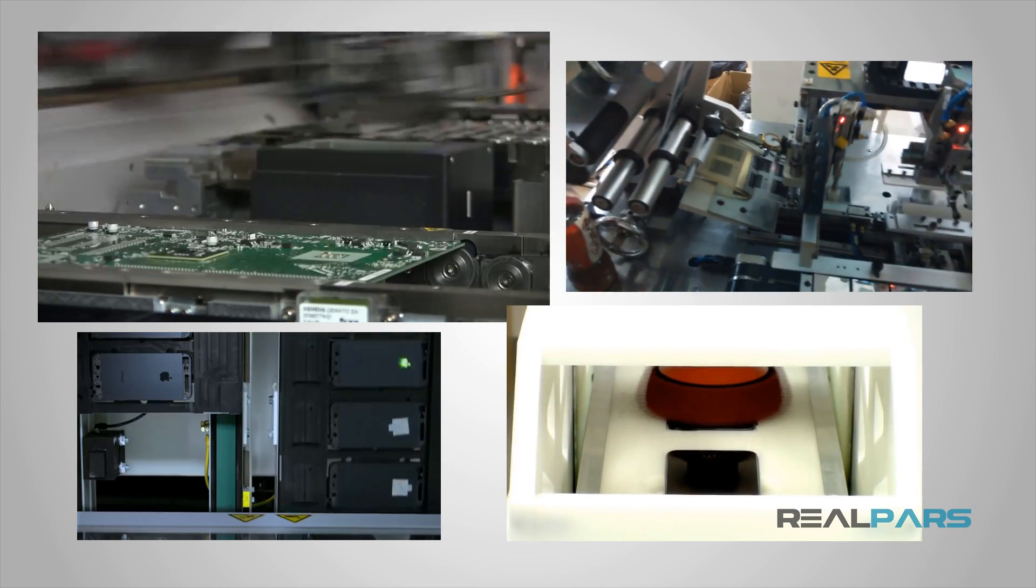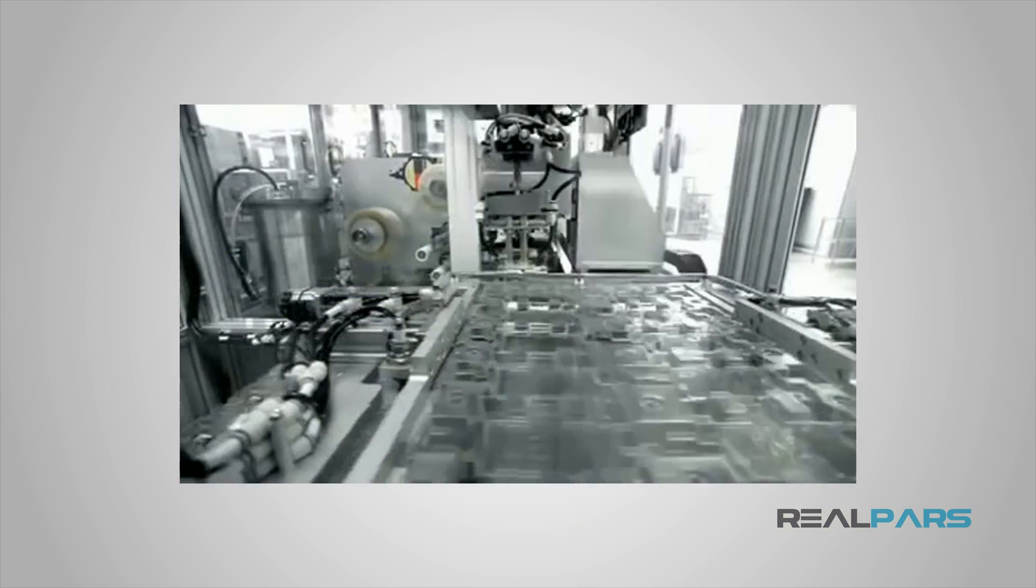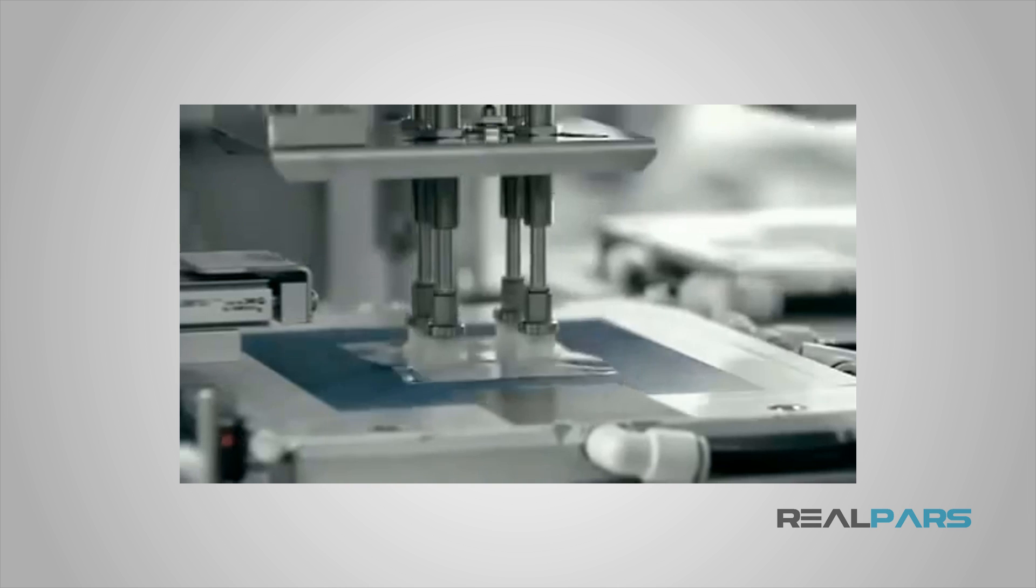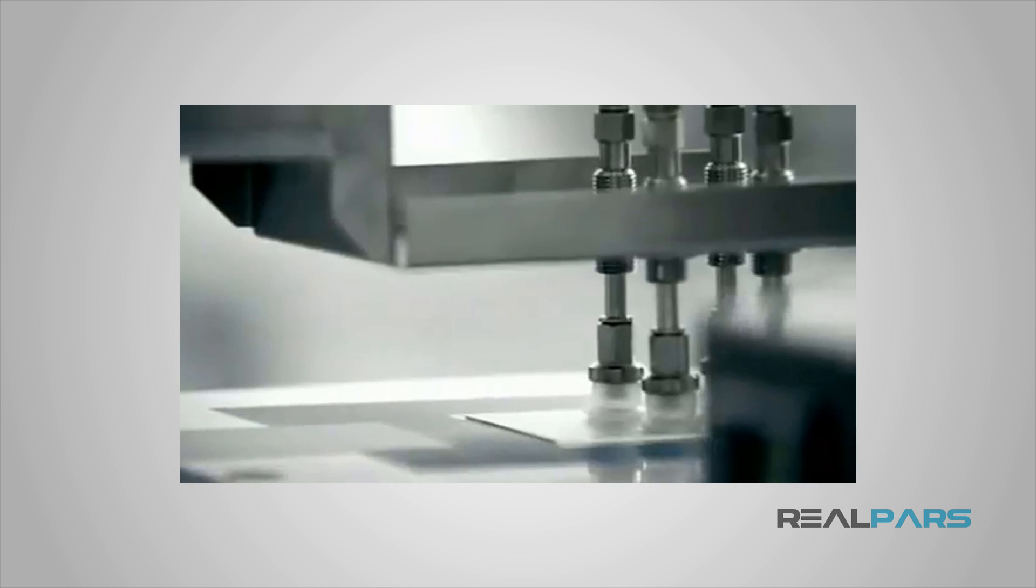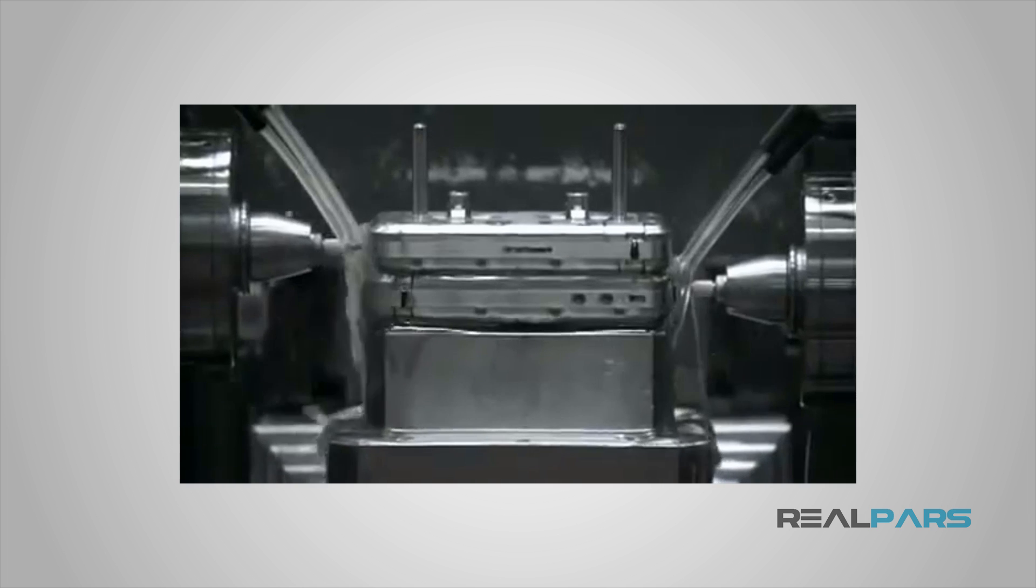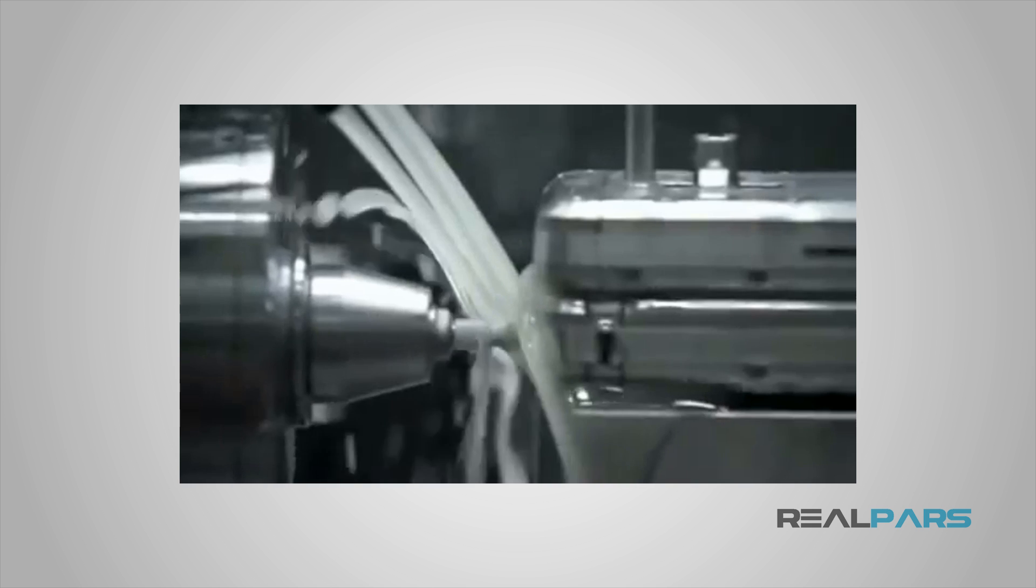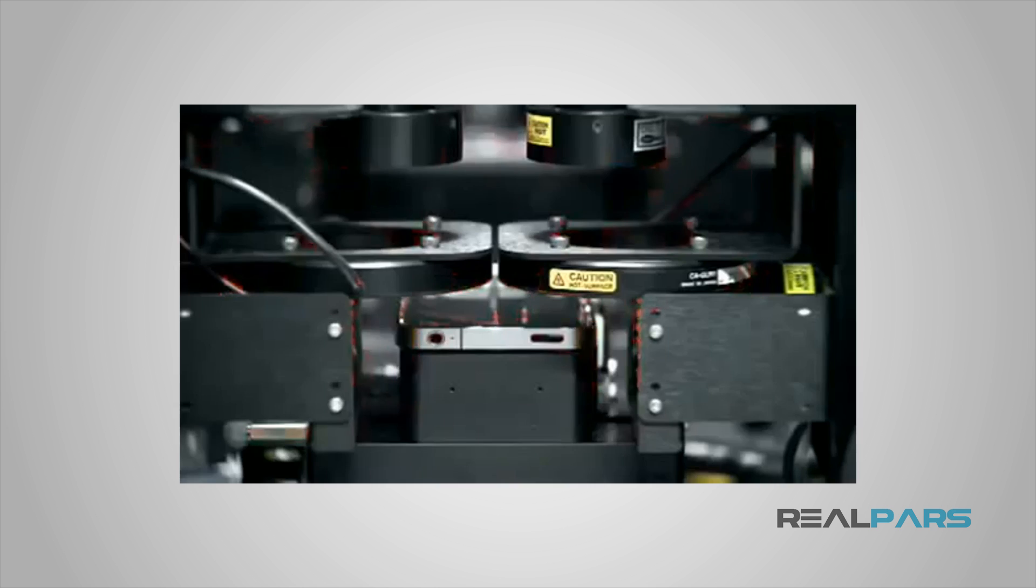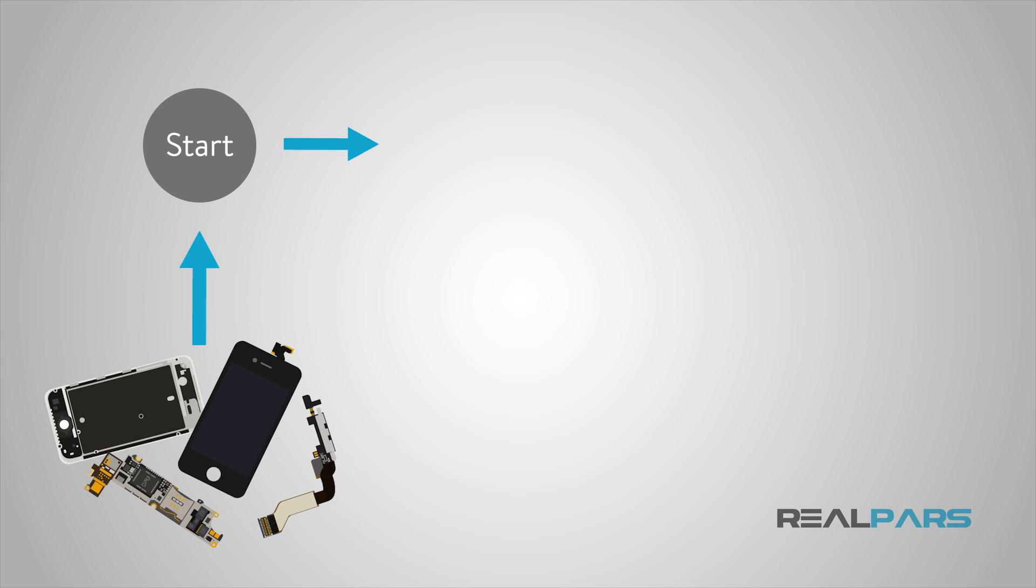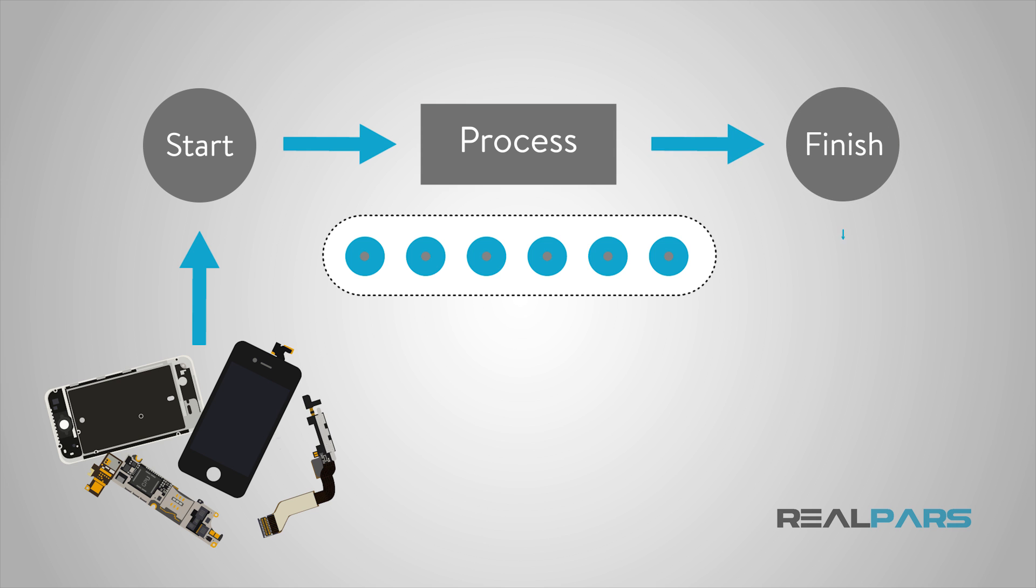When those parts are created in separate processes, they would then be shipped or moved to another production line that would then assemble those products into the whole, complete cell phone. The process to assemble the cell phone may take the cell phone case and first install the screen. After that screen is installed, it may then be followed by the circuit board, the battery, the memory card, etc. When the cell phone is assembled, again, it is assembled using a discrete automation process.